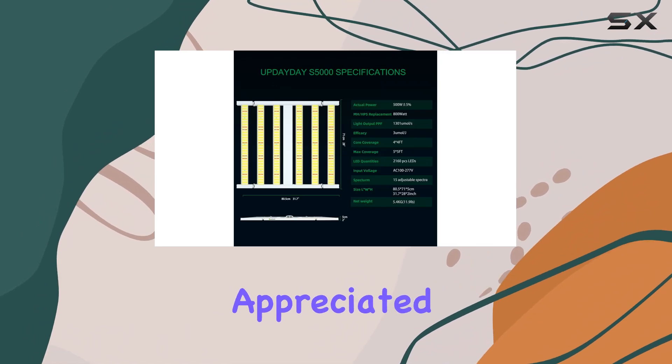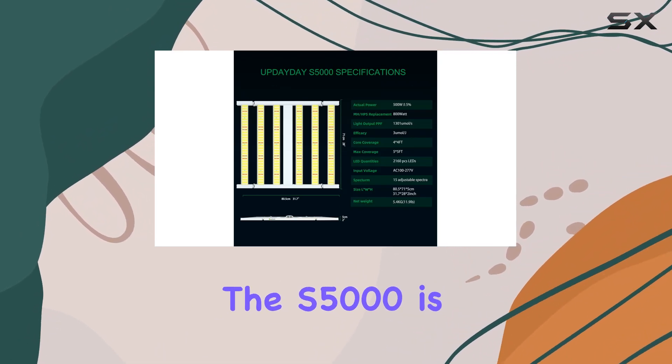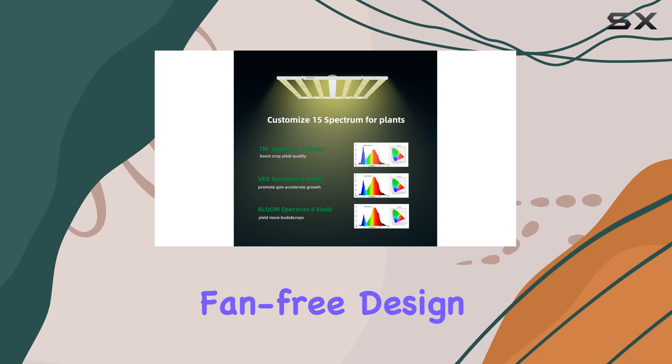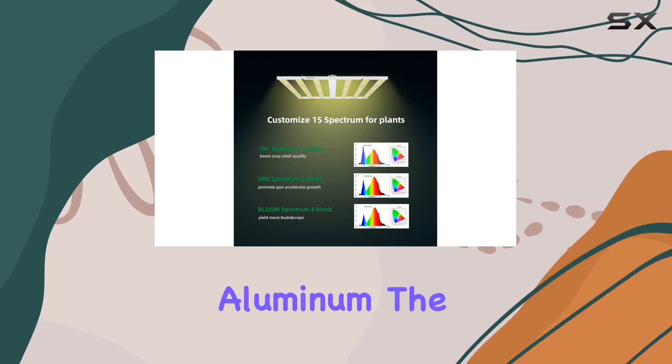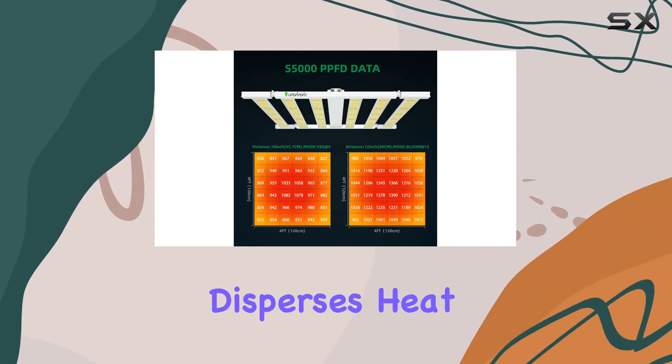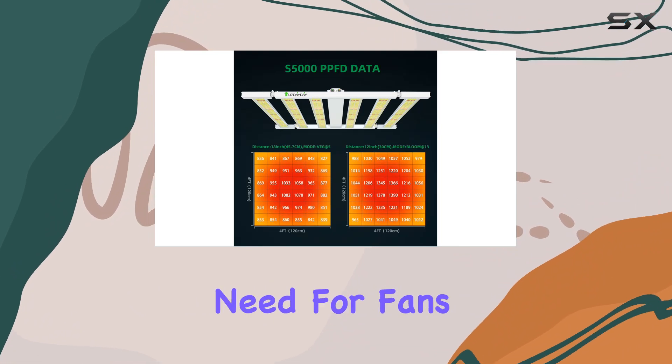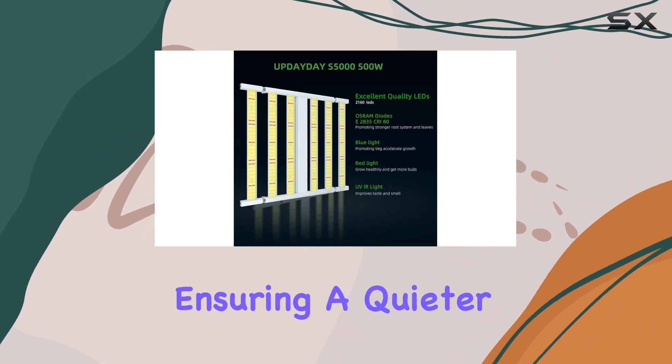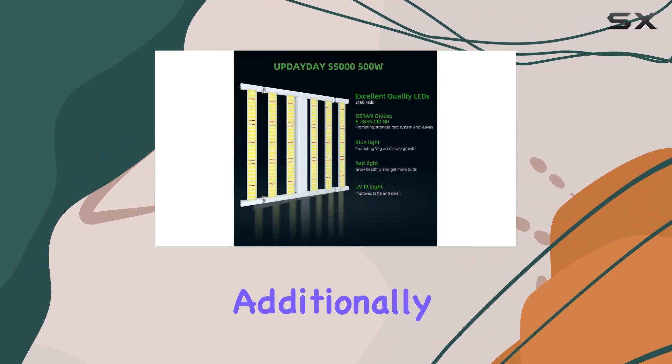One of the most appreciated features of the S5000 is its noiseless, fan-free design. Built from high-quality aluminum, the light fixture disperses heat effectively without the need for fans, ensuring a quieter growing environment.